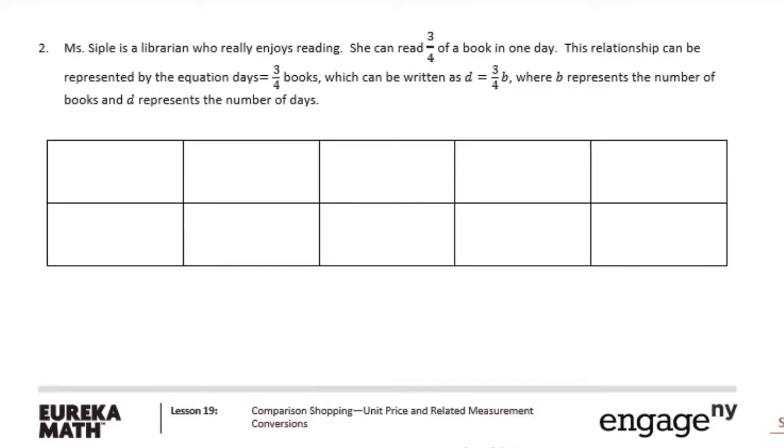So in our chart, we could say number of books and number of days. So if we have 1 book would take 3 fourths of a day. So to read 2 books, if we multiply this by 2, we would get 6 fourths or 1 and 1 half days. 3 books would be 9 fourths or 2 and 1 fourth days. And 4 books would be 12 fourths or 3 days.